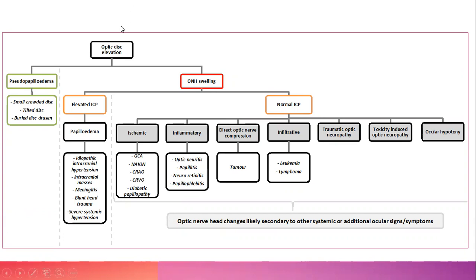Focusing on optic nerve head swelling: you break it down further into whether intracranial pressure is elevated or not. Elevated intracranial pressure gives you what we call papilledema, which is bilateral optic disc swelling from elevated intracranial pressure. It needs to be bilateral to be called papilledema. If you see papilledema, think raised intracranial pressure. Optic nerve head swelling with normal intracranial pressure is usually unilateral — normal ICP tends to more commonly be unilateral.